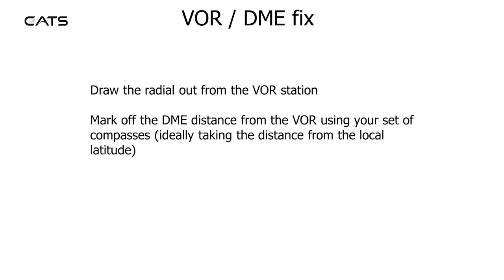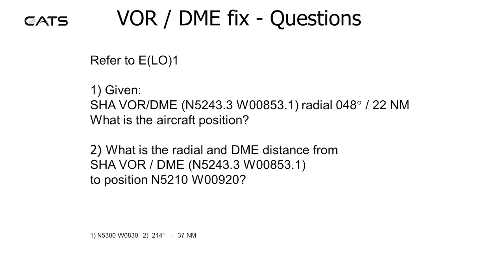VOR DME fix. Draw the radial out from the VOR station. Mark off the DME distance from the VOR using your set of compasses, ideally taking a distance from the local latitude. VOR DME fix questions: given Shannon VOR DME, radial 048, 22 nm, what is the aircraft position? What is the radial and DME distance from Shannon VOR DME to position north 5210, west 009-20?